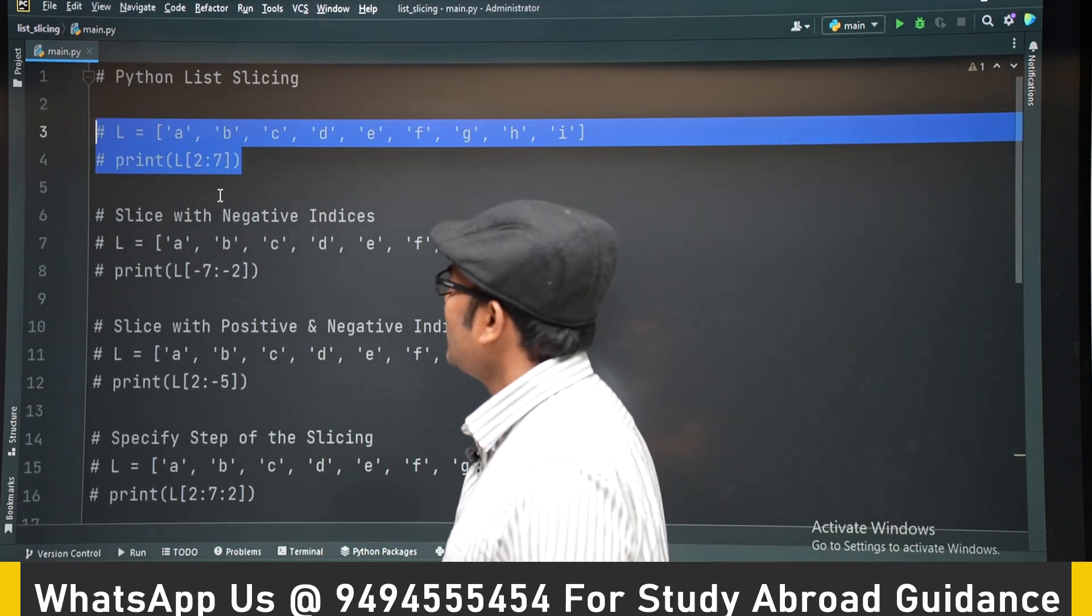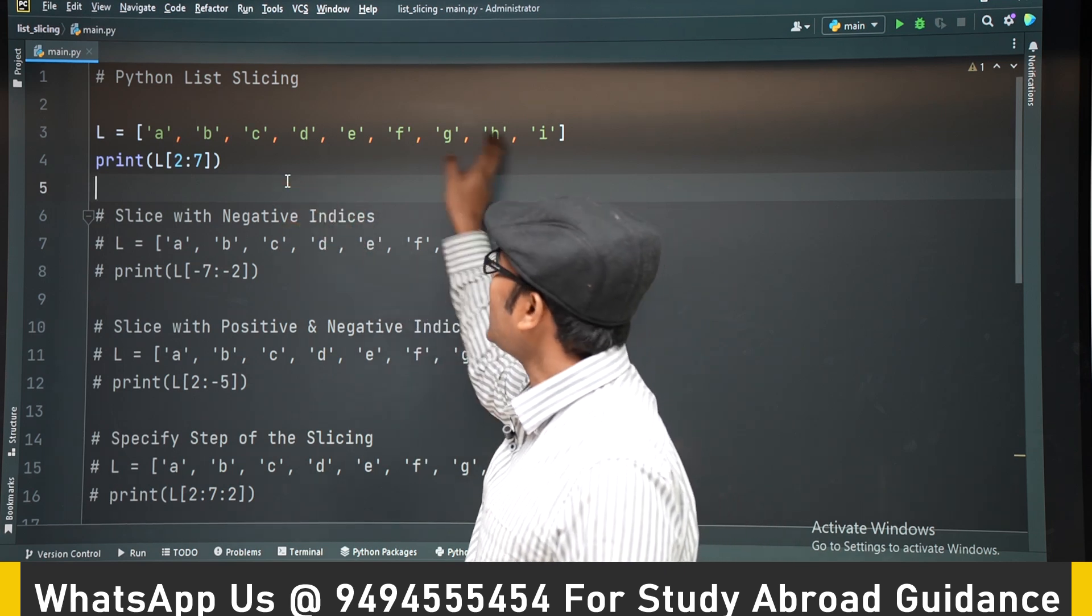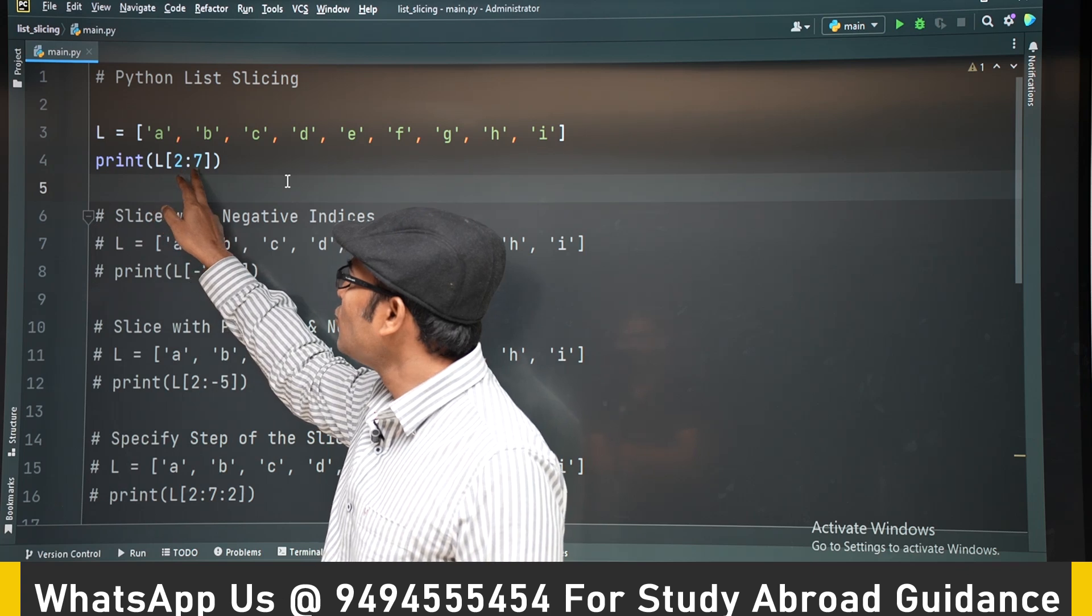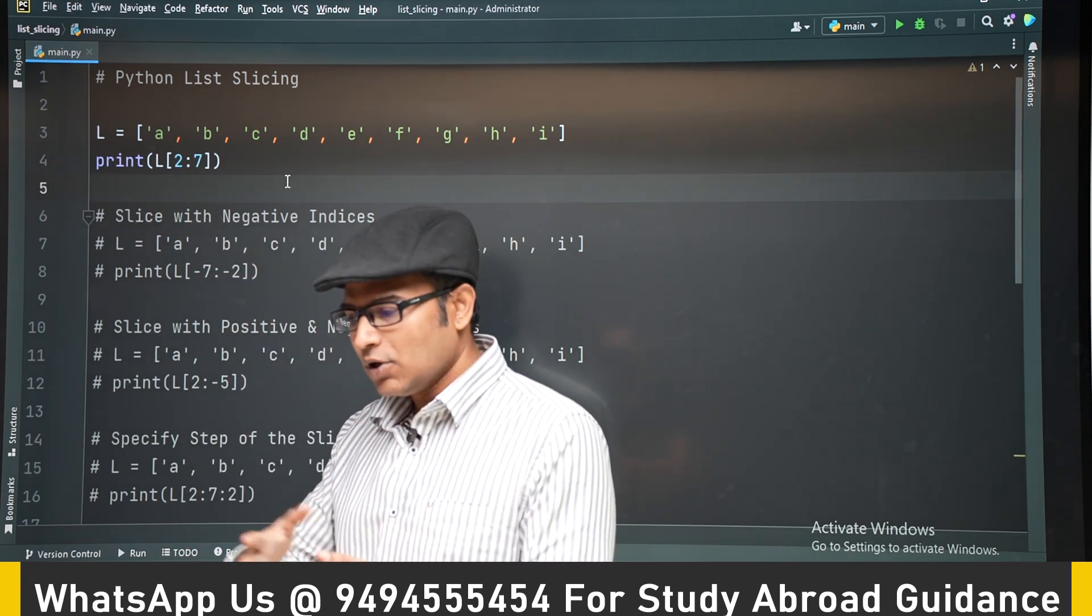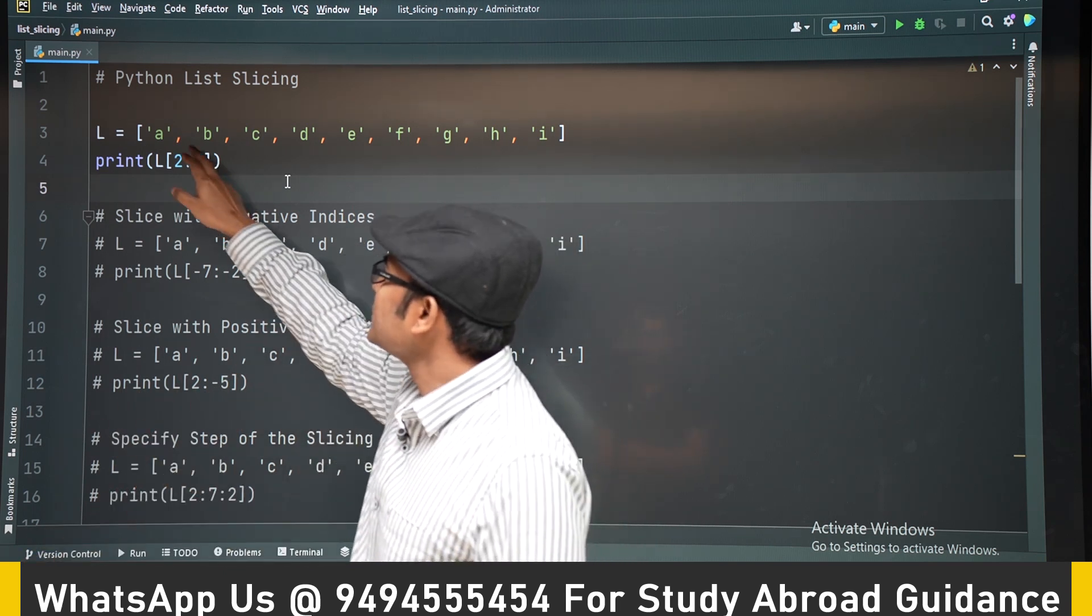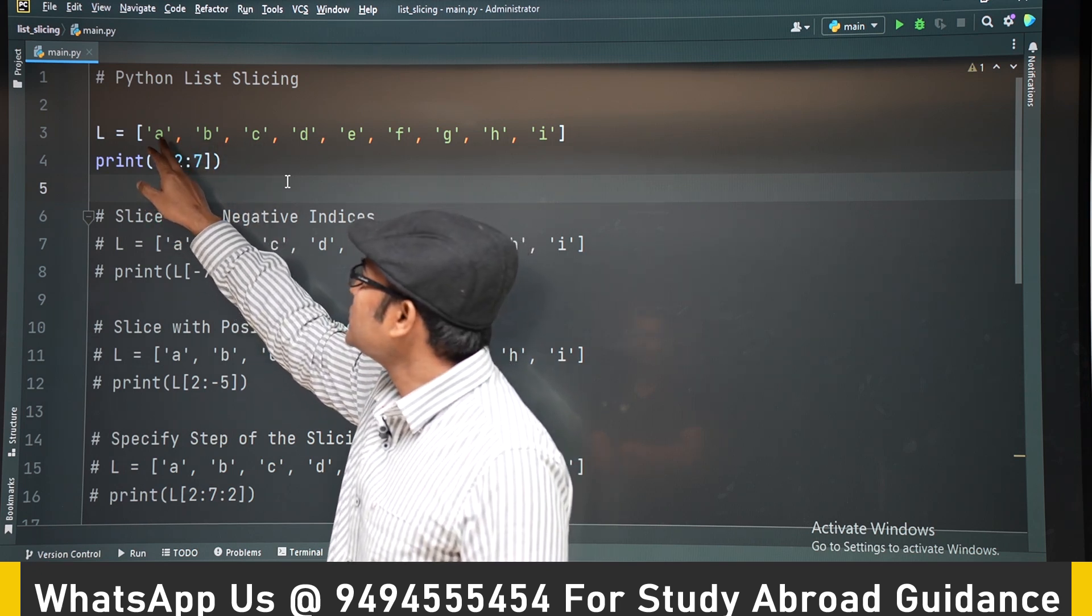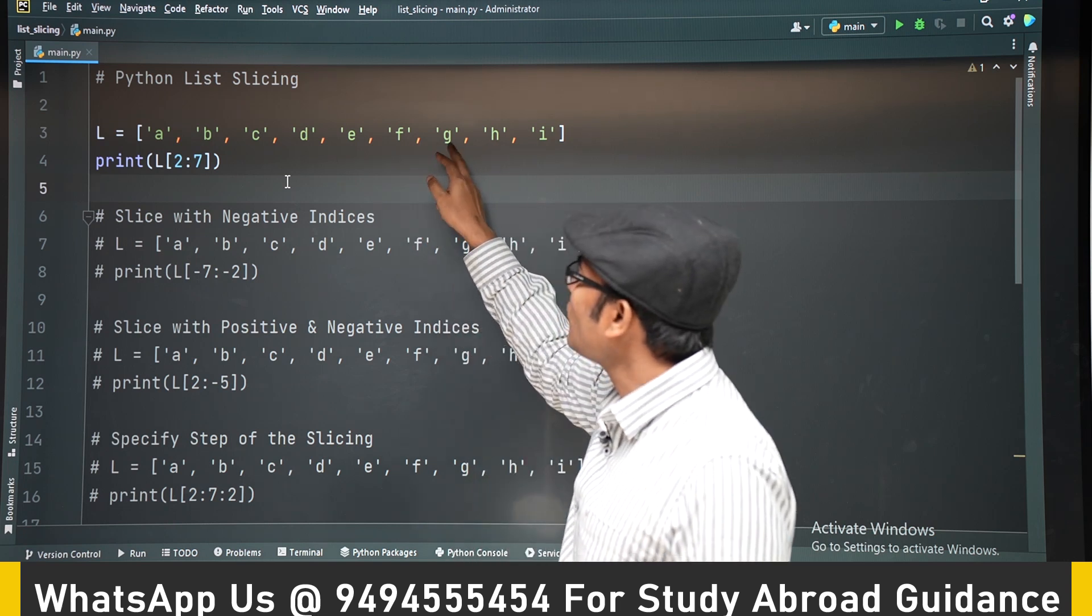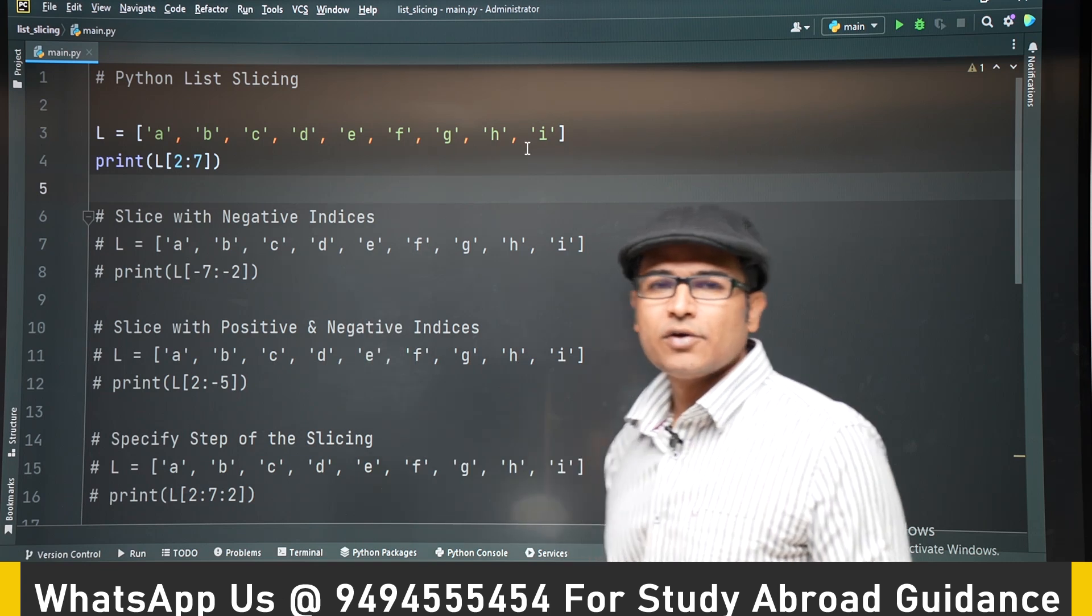Let's say we have a list here from a to i. If I write like this, list of 2 colon 7, then it will start from 2 and it will not go till 7, it will go till 6. In this case, 2 means index C, and 7 means index H. So it will go from C till G without going to H. That is one thing you have to understand here.